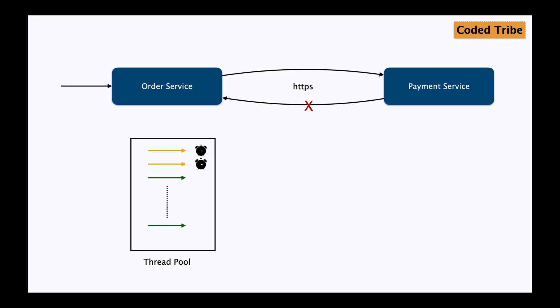Let's say there is a huge peak time and the number of requests to the order service is very high. All the incoming requests get assigned a thread from the thread pool, and eventually all those threads get occupied because the payment service is down. In that case, no thread will be available to execute any more requests. So the order service will also not be able to serve any more requests because there is no thread left in the thread pool. This scenario will lead to a cascading failure.